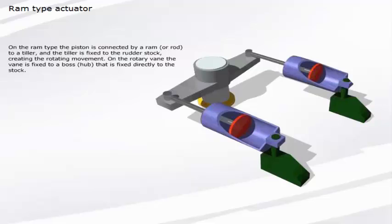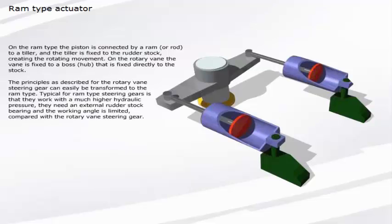On the RAM type, the piston is connected by a RAM to a tiller, and the tiller is fixed to the rudder stock, creating the rotating movement. On the rotary vane, the vane is fixed to a boss that is fixed directly to the stock. The principles as described for the rotary vane steering gear can easily be transformed to the RAM type.